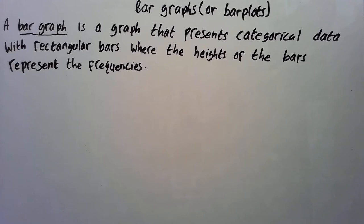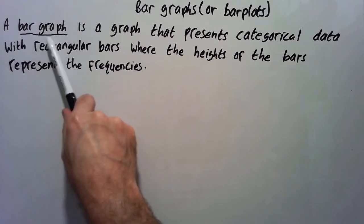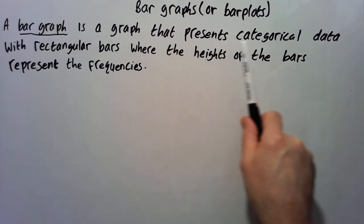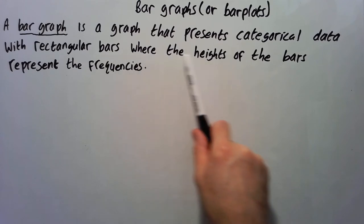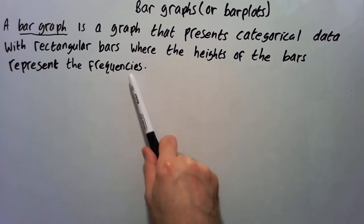Okay, so let's take a look at bar graphs. We're going to look at Practice Quiz 2 Question 3 in a second here. So a bar graph is a graph that presents categorical data with rectangular bars, where the heights of the bars represent the frequencies.